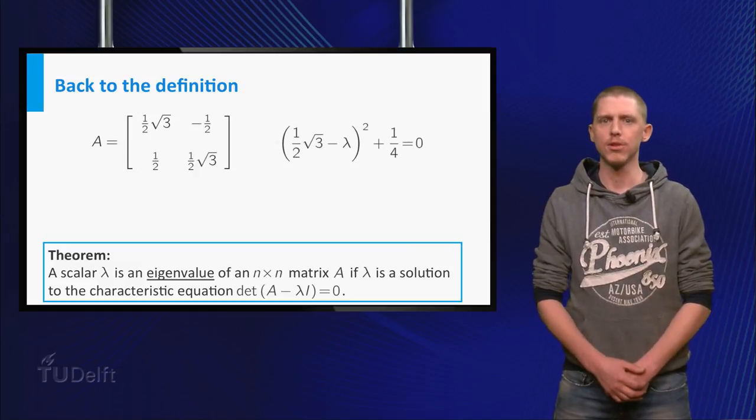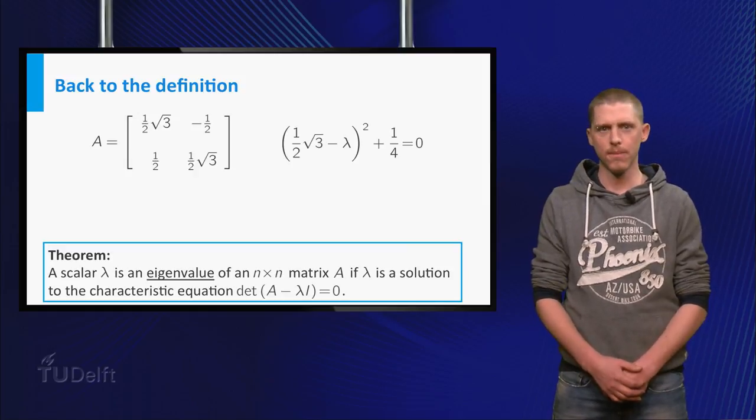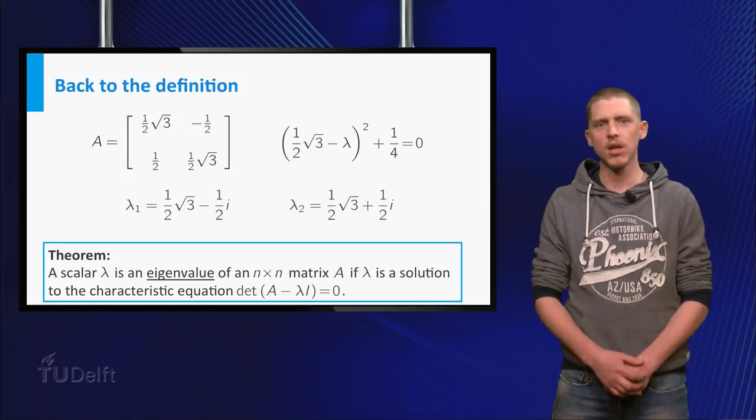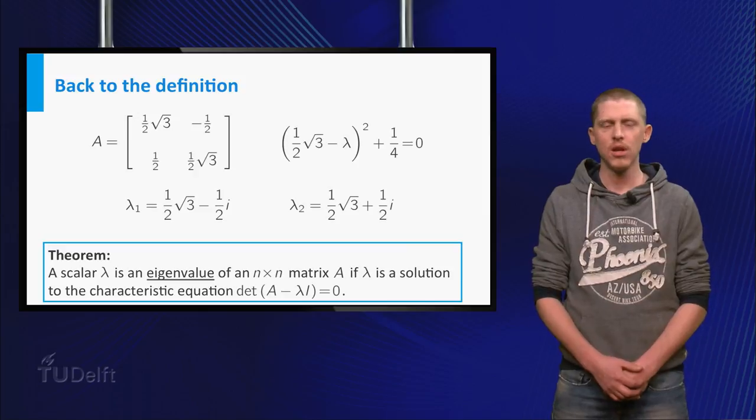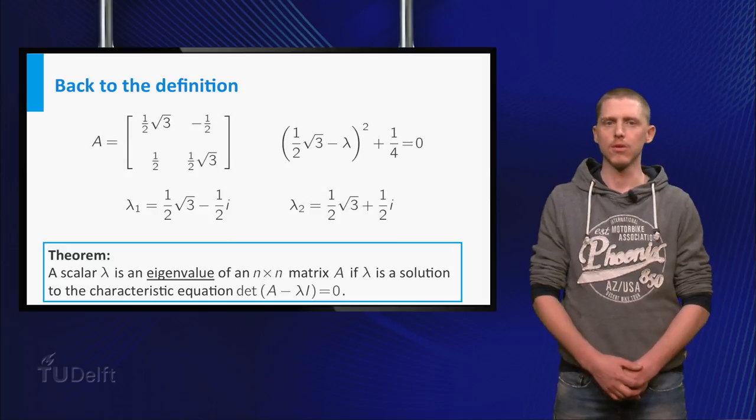If you go back to the rotation matrix A, the characteristic equation becomes the equation shown here. This equation has exactly two complex solutions, namely the square root of 3 over 2 plus or minus i over 2.